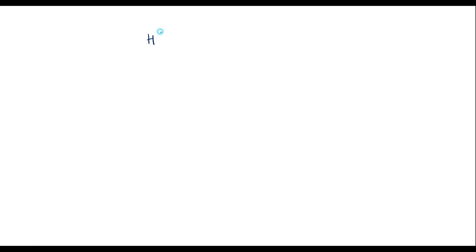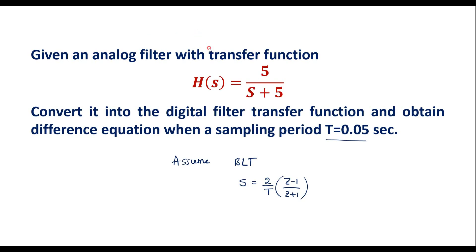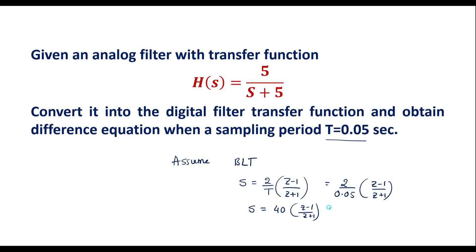So the analog filter is H(S) = 5 divided by (S + 5). Here 2/T — with T equal to 0.05 — gives 2 divided by 0.05, which equals 40. Therefore S is replaced by 40 * (Z minus 1) divided by (Z plus 1).